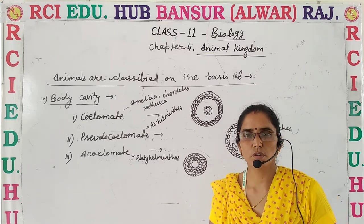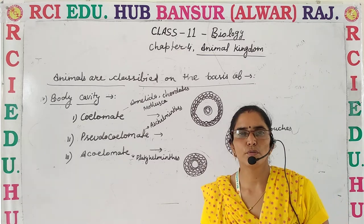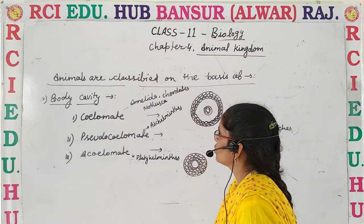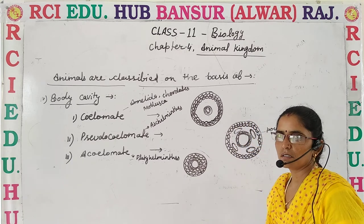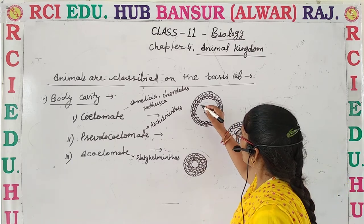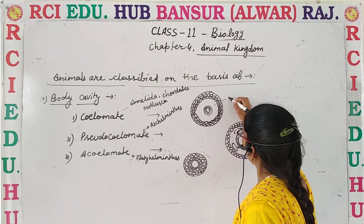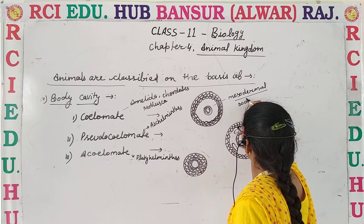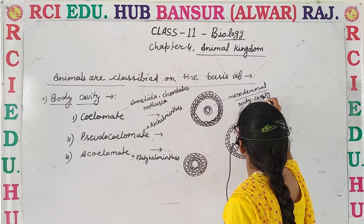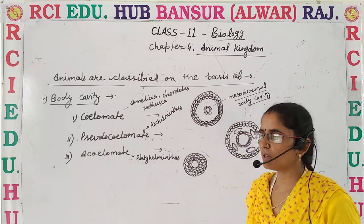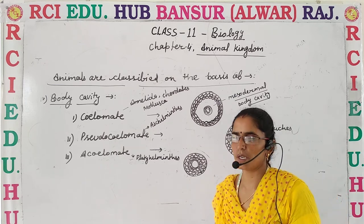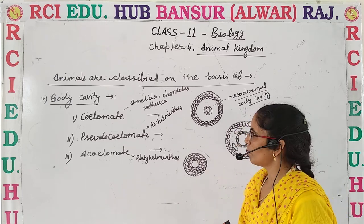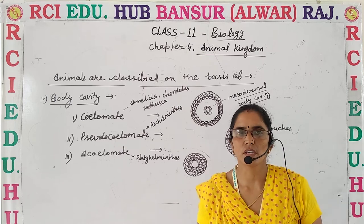So now the fourth point on the basis of which we will classify the animals is body cavity. When the body cavity is present in the mesodermal region, the organisms are known as coelomate. It means the organism which has a body cavity — that is known as coelomic cavity — and the organisms are known as coelomates.